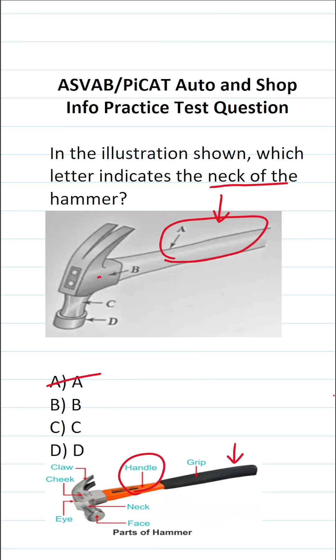B — this part right here is called the cheek of a hammer, so B is not correct. D right here is the face of a hammer, so D is not correct.